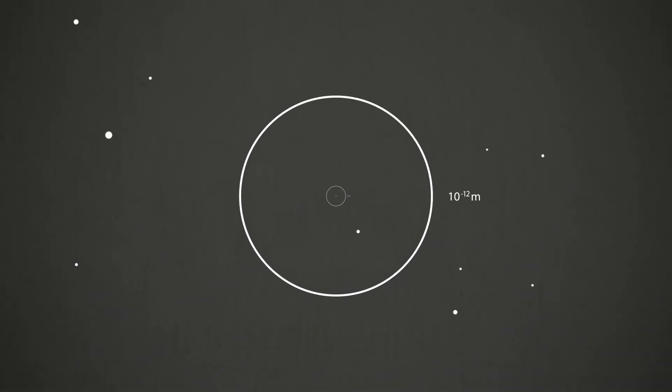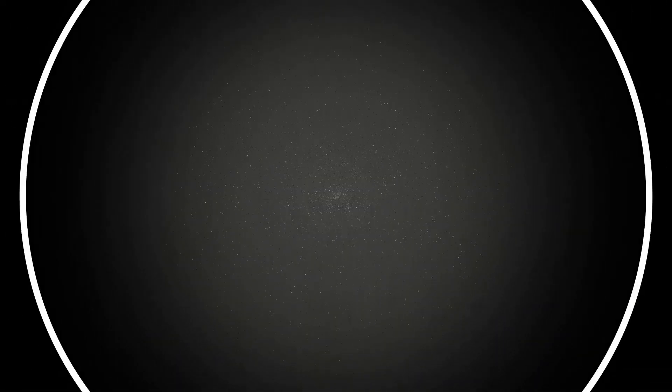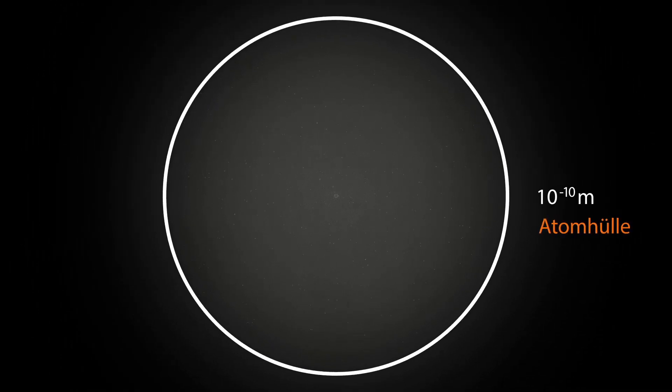This is how we know that most of the atom is empty. The electron shell is almost 100,000 times larger than the nucleus.